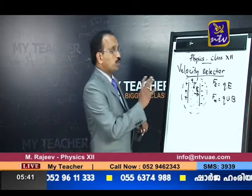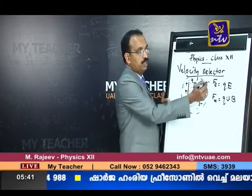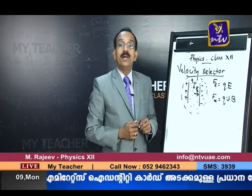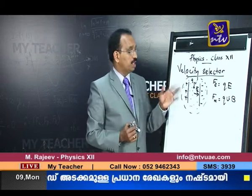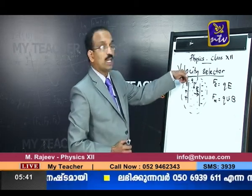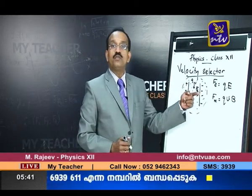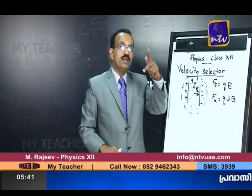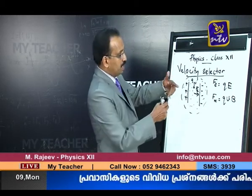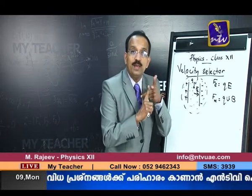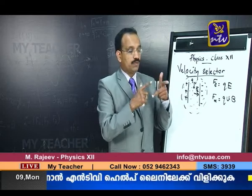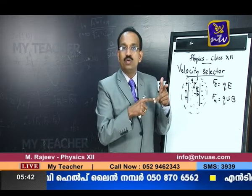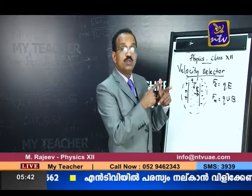Now we will resume with the velocity selector setup — the force by the electric field and force by the magnetic field. We were on the way to find out in what direction the force by the magnetic field acts. This is the way the charged particle is moving, that is velocity, and this is the direction of the electric field force. To find the direction of the magnetic force, we use Fleming's left hand rule. The fingers represent: force, magnetic field, current.